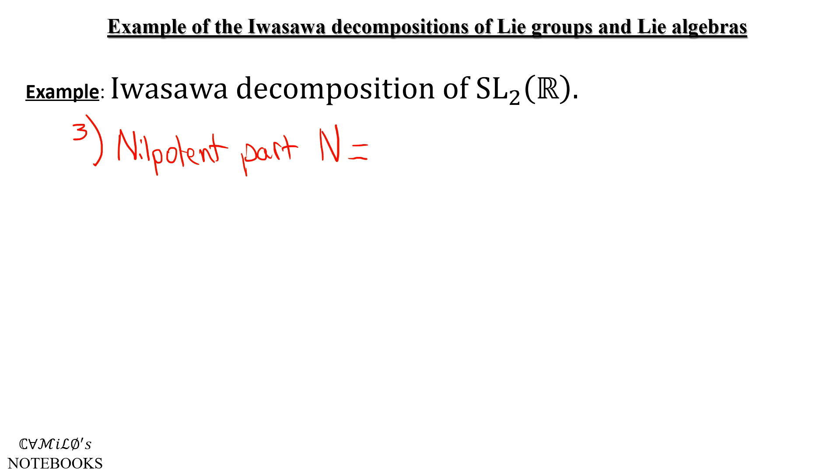And our third interesting subgroup in here will be the nilpotent part, of matrices of this form: (1, X; 0, 1) for X a real number, and this is of course just isomorphic to ℝ.